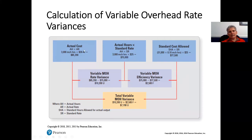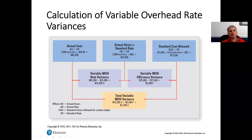This is a three-column approach that's easier to understand. On the far left are actual numbers; on the far right are pure budgeted numbers; in between is a combination — actual hours times the standard rate. Looking at the variable overhead rate variance: actual hours × actual rate = $85,200. Actual hours × standard rate = 3,000 × $25 = $75,000. The difference between these two is $10,200 unfavorable, since actual is higher.